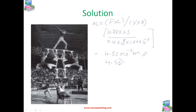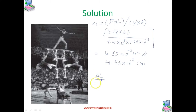That is 4.55 × 10⁻³ cm, which is a very small change. The fractional decrease in the thighbone is very small — we can write it as 0.0091%. This is a very, very small change in the length.